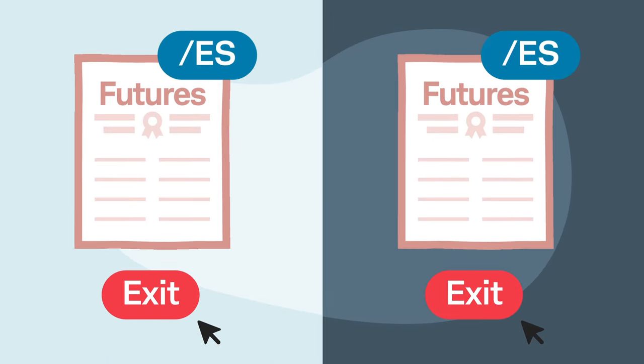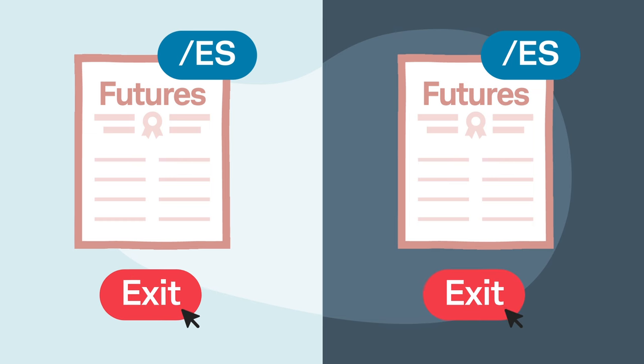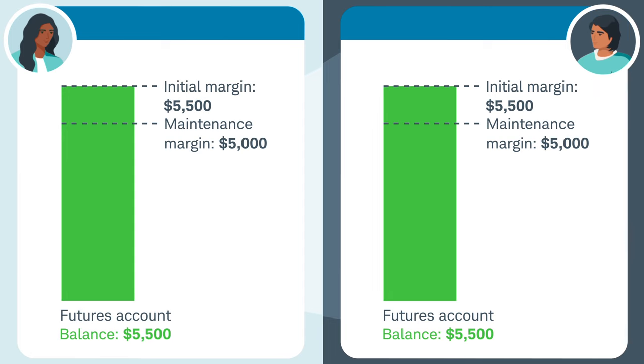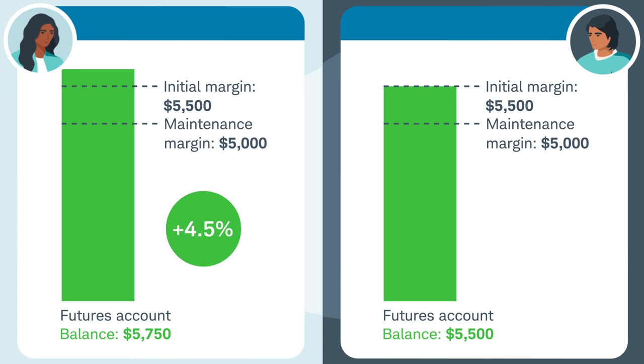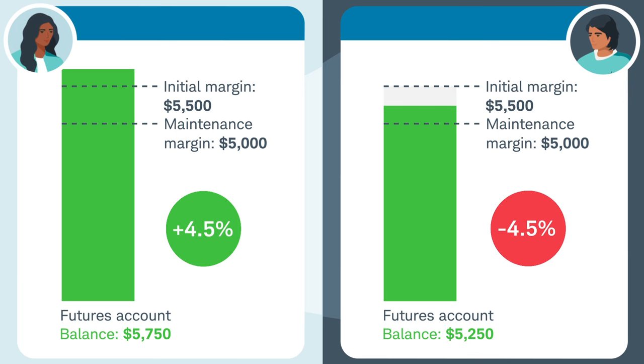To end our example, let's say that both traders closed their trades before expiration. Trader A's account started at $5,500 and ended with $5,750 for a return of 4.5%. Trader B started with $5,500 and ended with $5,250 for a loss of 4.5%. You can see how quickly profits and losses on a futures trade can change with just small moves in the underlying index. Remember, gains or losses on futures positions may exceed the initial margin requirement. But now that you've seen how margin works, you can better anticipate potential outcomes and plan accordingly.